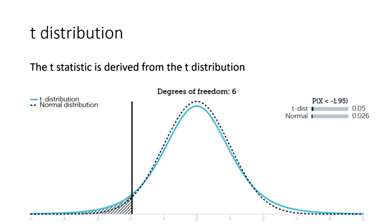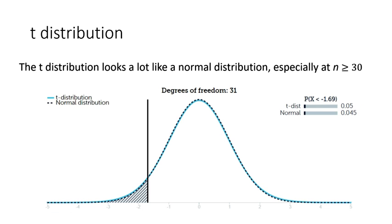The t-ratio is used to calculate a t-statistic, which is a number that can be compared to known values taken from a t-distribution. The t-distribution looks a lot like a normal distribution, especially when the number of cases is 30 or more.